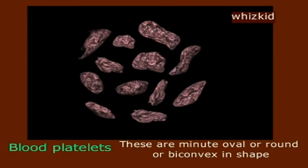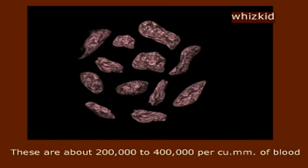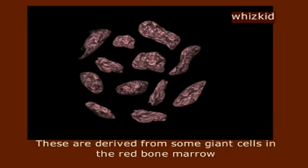Blood platelets or thrombocytes are minor, oval, round, or biconvex in shape. Platelets do not have a nucleus but have cytoplasm. There are about 200,000 to 400,000 platelets per cubic millimeter of blood. They are derived from stem cells in the red bone marrow.